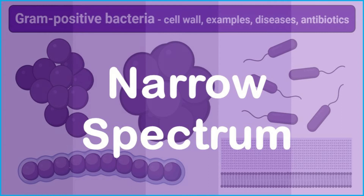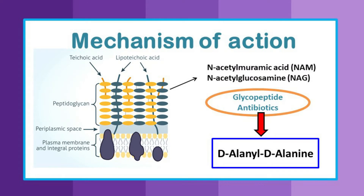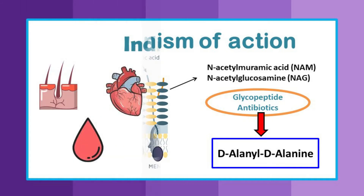In the WHO AWaRe classification of antibiotics, this group falls under the Watch group, so these drugs are monitored in antimicrobial stewardship programs. Regarding mechanism of action, glycopeptide antibiotics inhibit cell wall synthesis. They penetrate into the gram-positive bacterial cell wall, which is made up of a peptidoglycan layer consisting of sugar and amino acid components — specifically N-acetyl muramic acid and N-acetyl glucosamine. Glycopeptides bind to the D-alanine D-alanine formation involved in peptidoglycan synthesis, compromising cell wall integrity and destroying the bacteria.